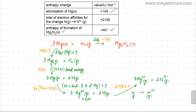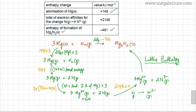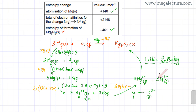The last step is when the gaseous ions come together to form the ionic lattice, and this is equivalent to the lattice enthalpy — the energy change we need to calculate. Remember, the number of moles is very important in the Hess cycle: ionization energies are multiplied by 3, electron affinity by 2, and atomization of Mg by 3.